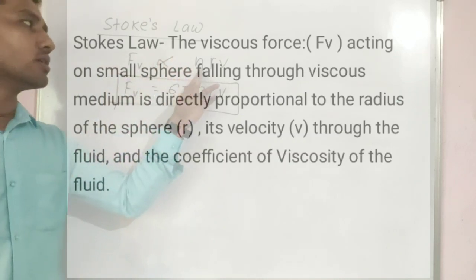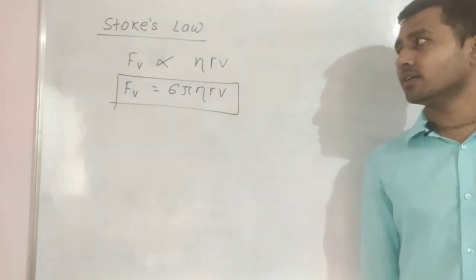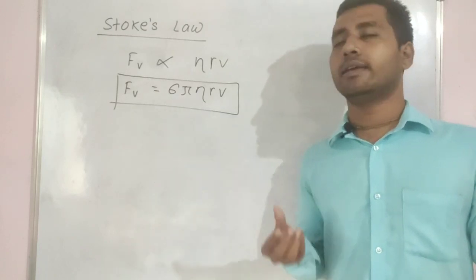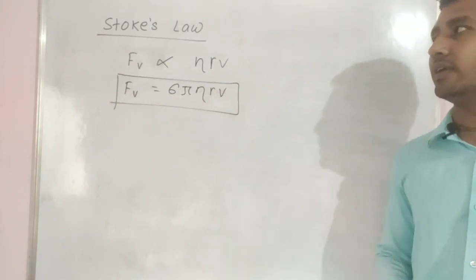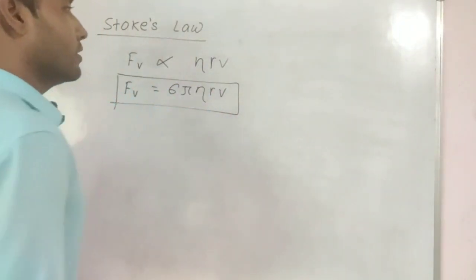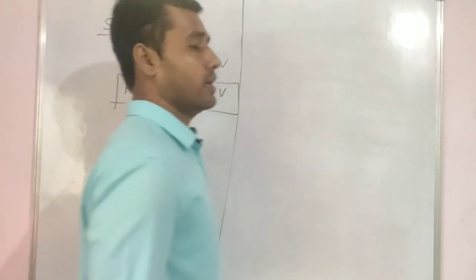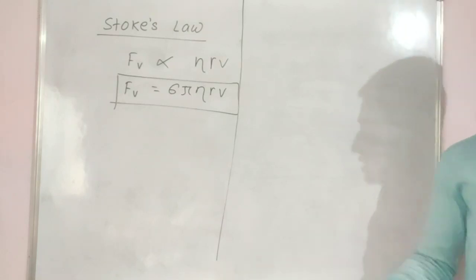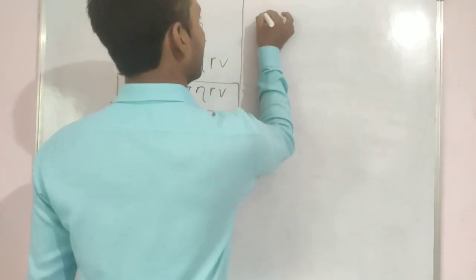Here r is the radius of the sphere and v is the velocity. The experimentally obtained constant is 6π, so the final formula we use is Fv = 6πηrv — this is Stokes law. Now we are going to learn a very important concept: terminal velocity. For Maharashtra board class 12 physics, terminal velocity can be asked for 3 marks, so it is a very important concept.